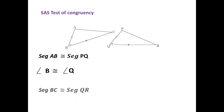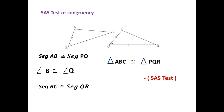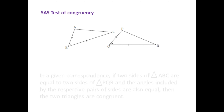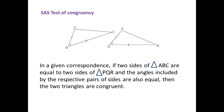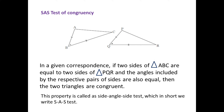As we can observe, there are two sides and the included angle congruent with the corresponding two sides and included angle of triangle PQR. So by the Side Angle Side test, these two triangles are congruent. We can define this as: if two sides of triangle ABC equal two sides of triangle PQR and the angles included by the respective pairs of sides are also equal, then the two triangles are congruent by the SAS test.